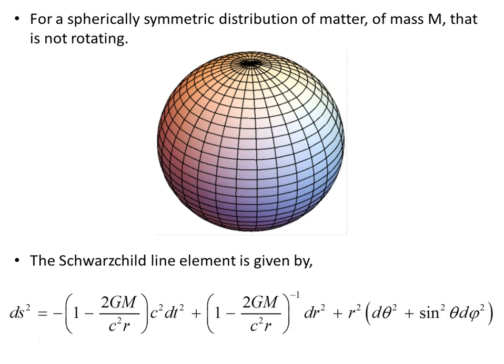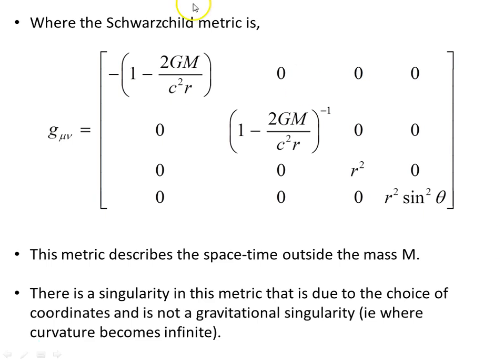Let's start with a spherically symmetric distribution of matter of mass capital M that is not rotating. Now the Schwarzschild line element is given by this object here. Let's go over and look at the Schwarzschild metric, this object here, with these terms here.